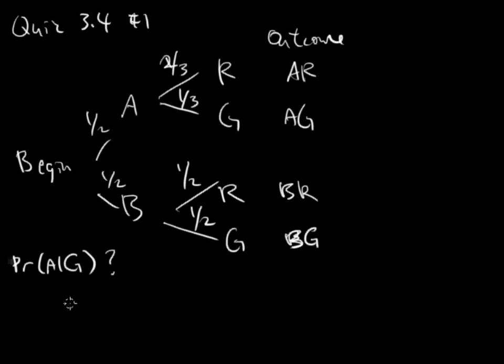Again, like every single conditional probability, you're going to have to translate that into the intersection of both. So probability of A intersect G over the probability of the bottom, which is G.